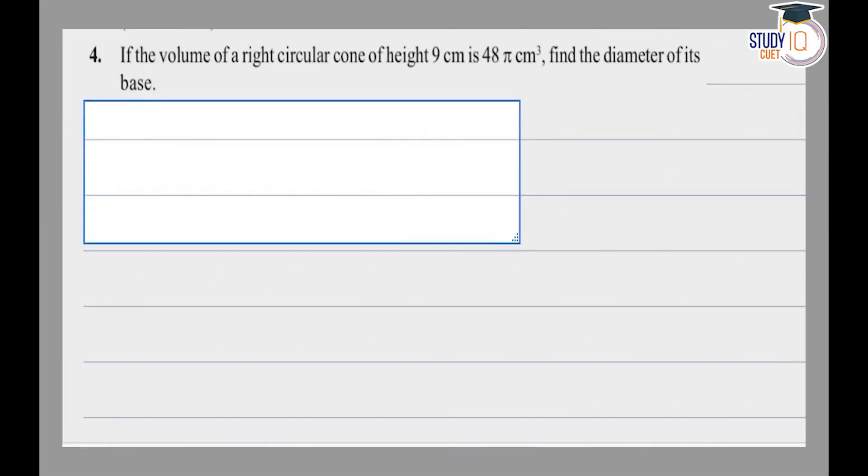Hello student, this is question number four from Exercise 13.7 of NCERT Class 9th. If the volume of a right circular cone of height h is 48π centimeter cube, the volume of the cone V equals 48π cm³.